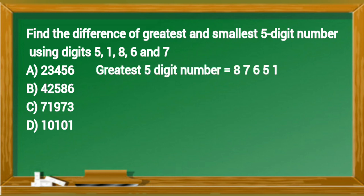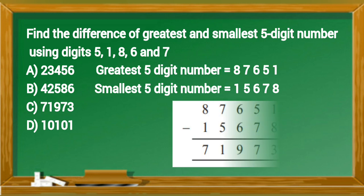Greatest five-digit number equals 87,651. Smallest five-digit number equals 15,678. Difference of these numbers is 71,973. So option C is correct answer.